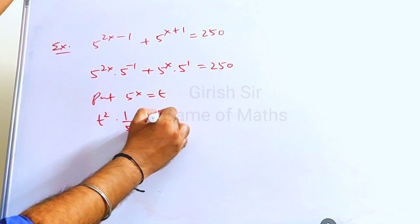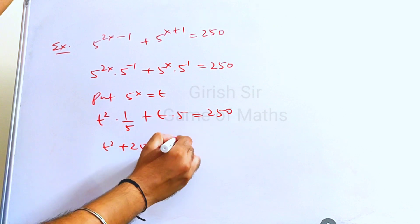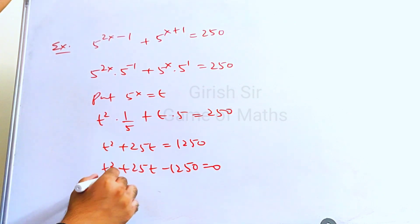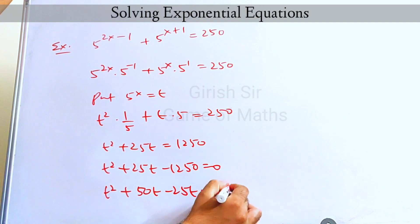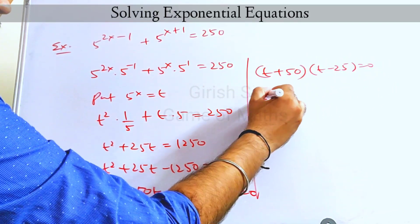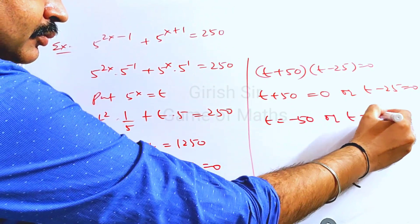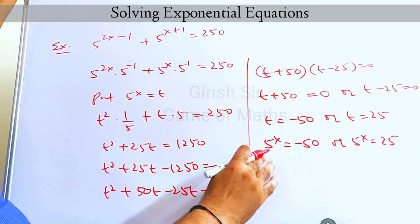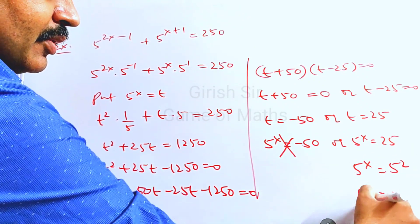5 inverse can be written as 1 by 5. Now I will multiply by 5 on both sides. This is quadratic in t, so let's split the middle term. So either this term is 0 or the second term is 0. Putting back the value of t: 5 raised to x cannot be a negative number, so we reject that solution. We get 5 raised to x equal to 25, which means x equal to 2 is the only solution.